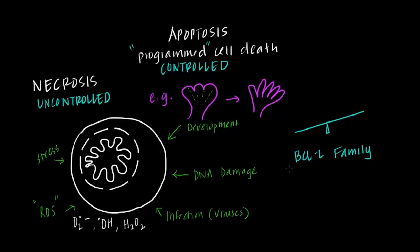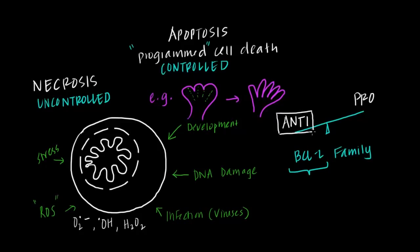The BCL2 name comes from where these proteins were first discovered — in a B-cell lymphoma, a type of cancer of B-cells, which are immune cells. There are two types of proteins in this family: pro-apoptotic proteins, which push the cell toward apoptosis, and anti-apoptotic proteins, which oppose it. When the cell is healthy and not receiving apoptotic signals, the balance favors anti-apoptotic proteins, which inhibit the mitochondria from initiating apoptosis. But when the mitochondria receives downstream apoptotic signals, the balance shifts toward pro-apoptotic proteins, which facilitate increased permeability of the outer mitochondrial membrane.